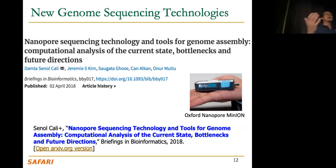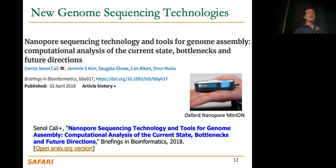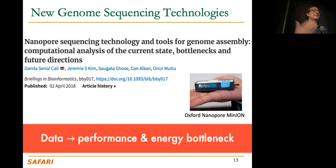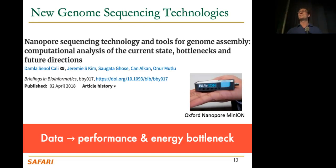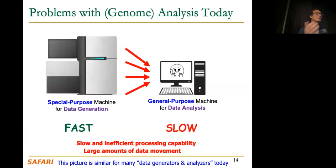The sequencing device cannot do processing of the data, and if you move it to a laptop, that laptop is not good enough to do many analyses. So for sophisticated analyses you need to move the data to a data center, for example. This causes a lot of data movement and inefficiency. The main theme of this talk is: data is a bottleneck in all interesting applications, and we need to put computation together with memory to ensure data doesn't become a bottleneck.